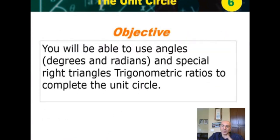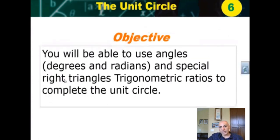Here's the objective: you will be able to use angles — that is, degrees and radians — and special right triangles with right-angle trigonometric ratios to complete the unit circle.